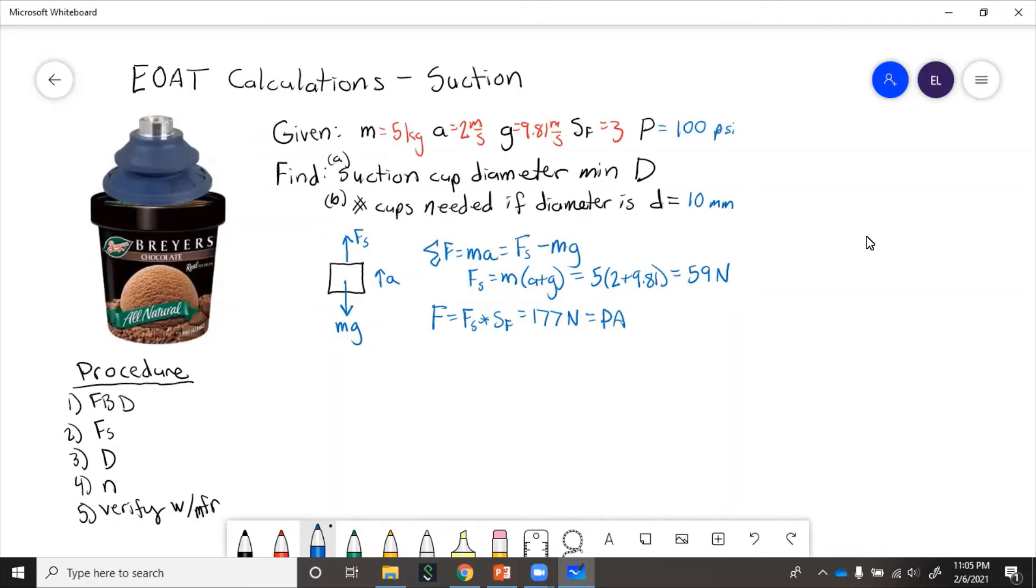But area of a circle is pi d squared over 4. So now we can solve for d.